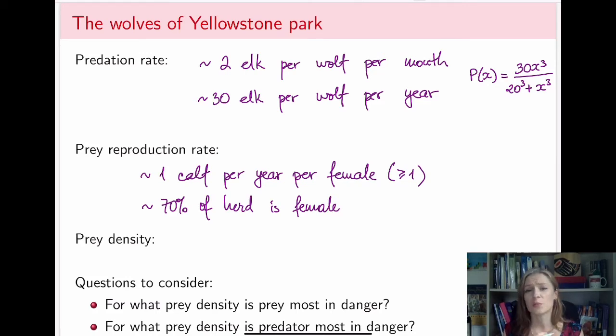So if we say approximately 70% of the herd is female and the female has to be at least one-year-old to actually reproduce and they produce approximately one calf per year,